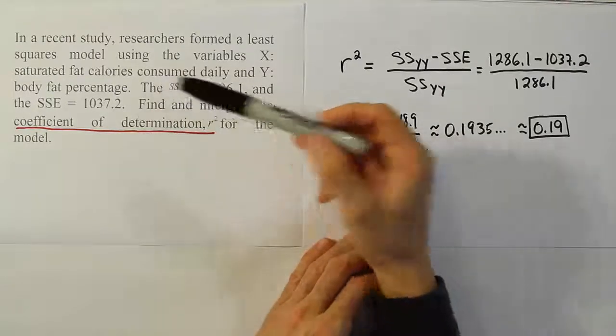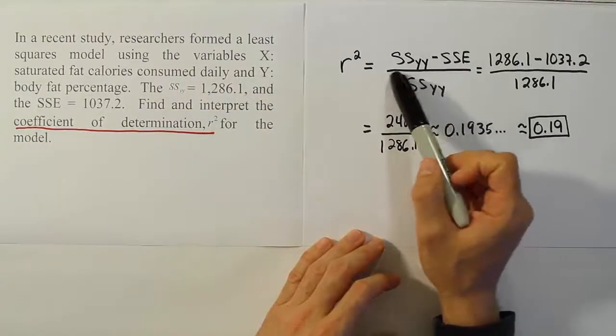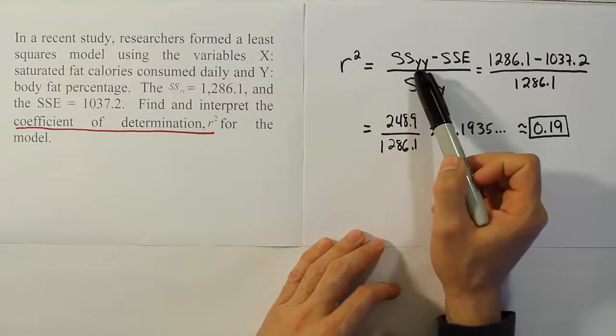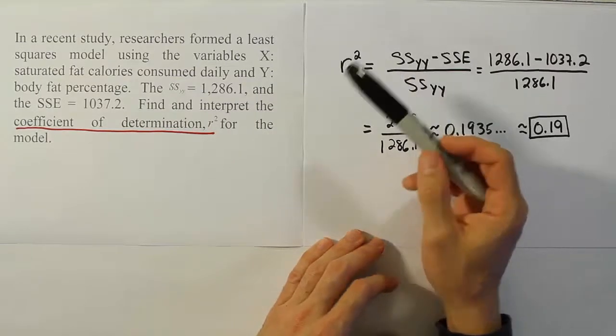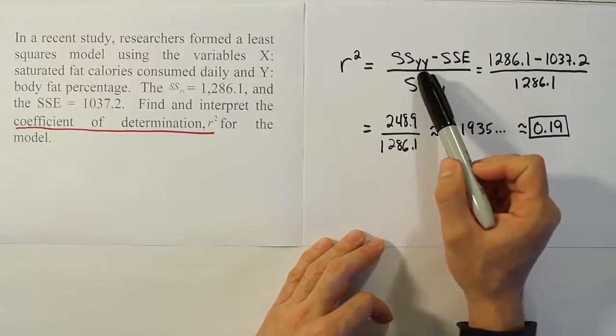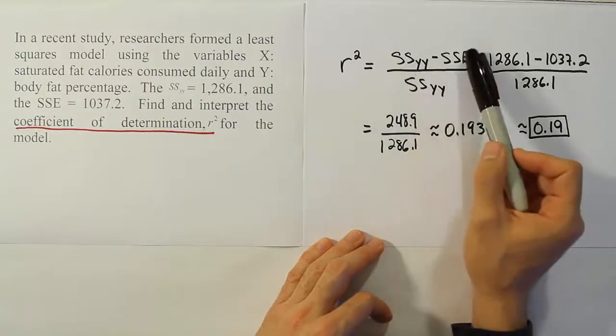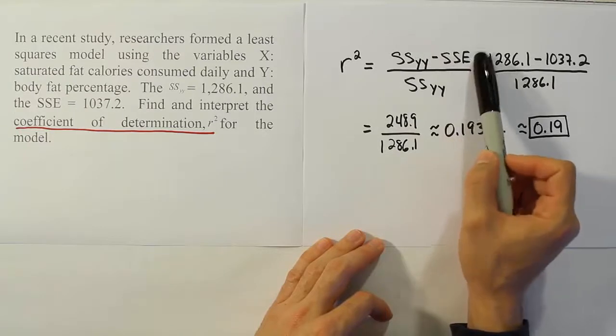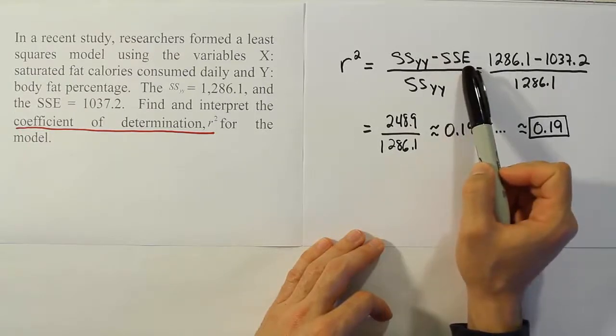In this case, our Y variable is body fat percentages. We see people in the study with different body fat percentages. One of the things we think explains that is how many saturated fat calories they consume daily. But then there are other factors: genetics, exercise habits, so on and so forth.